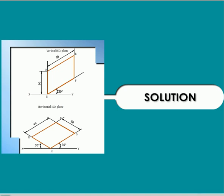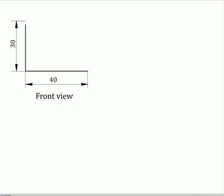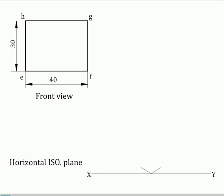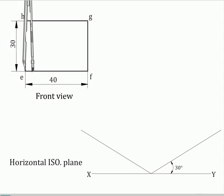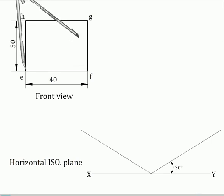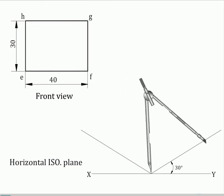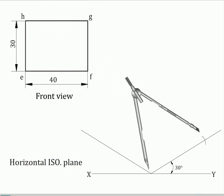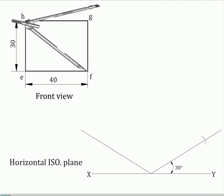Solution to example problem. Draw the given rectangle EFGH with the given size. Draw the two 30-degree making isometric axes and on them mark GH and GF with proper measures taken from the orthographic view. Also locate point E.